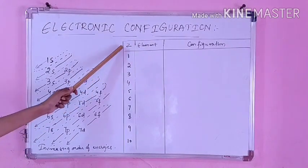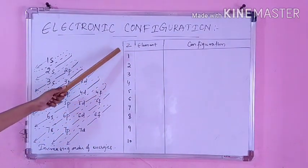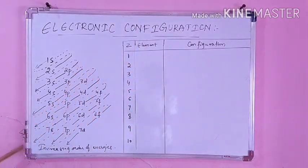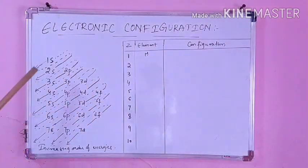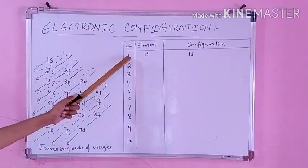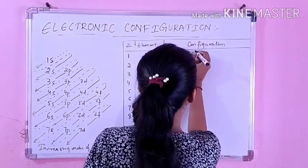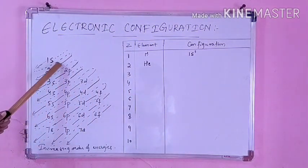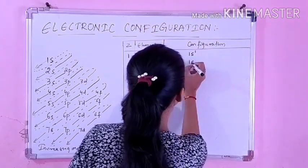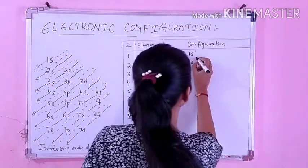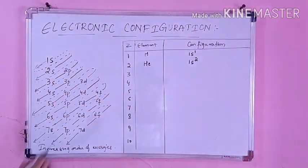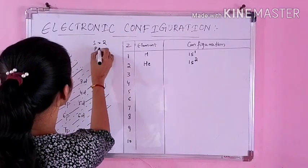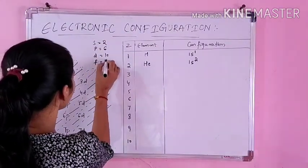Now we will write the electronic configuration of elements from atomic numbers 1 to 10. For hydrogen (Z=1), the electron goes in the lowest energy orbital, 1s — so it is 1s¹. For helium (Z=2), both electrons fill in 1s — so it is 1s². For lithium (Z=3), 1s² is filled and then 2s gets 1 electron — so 1s² 2s¹. For beryllium (Z=4), 1s² and 2s² are both filled completely — S can accommodate a maximum of 2 electrons.